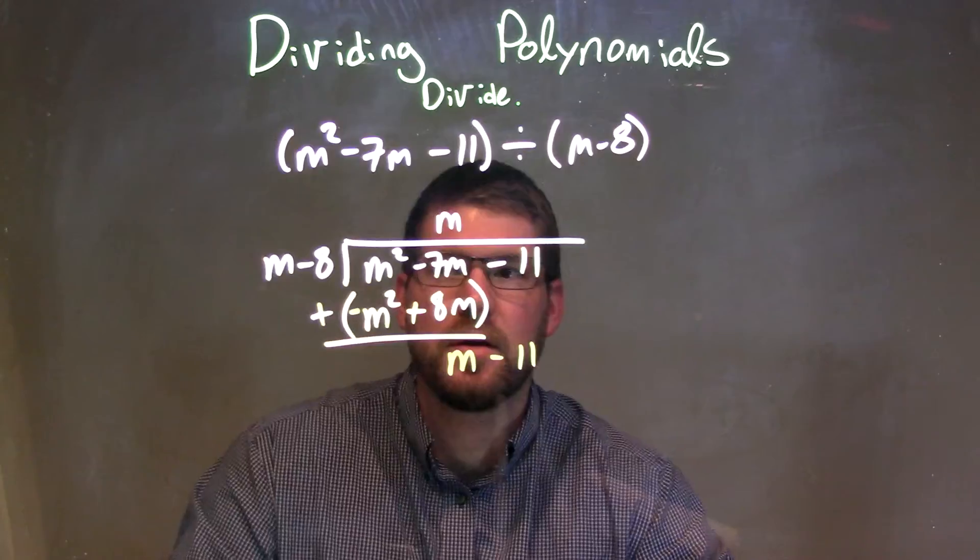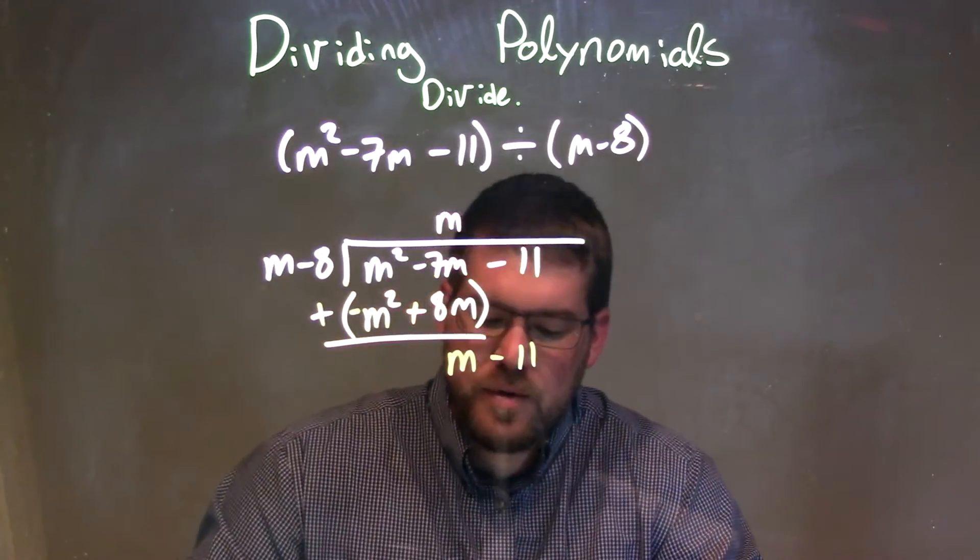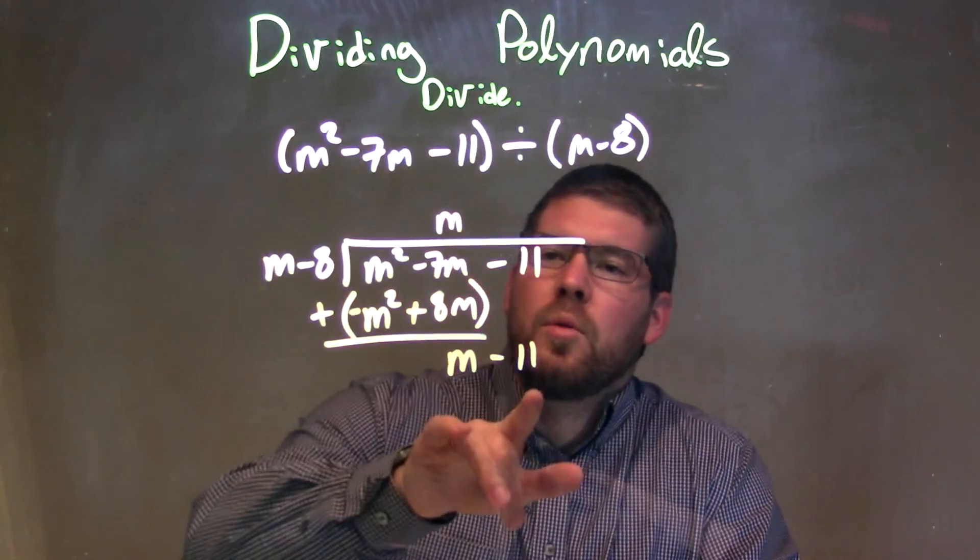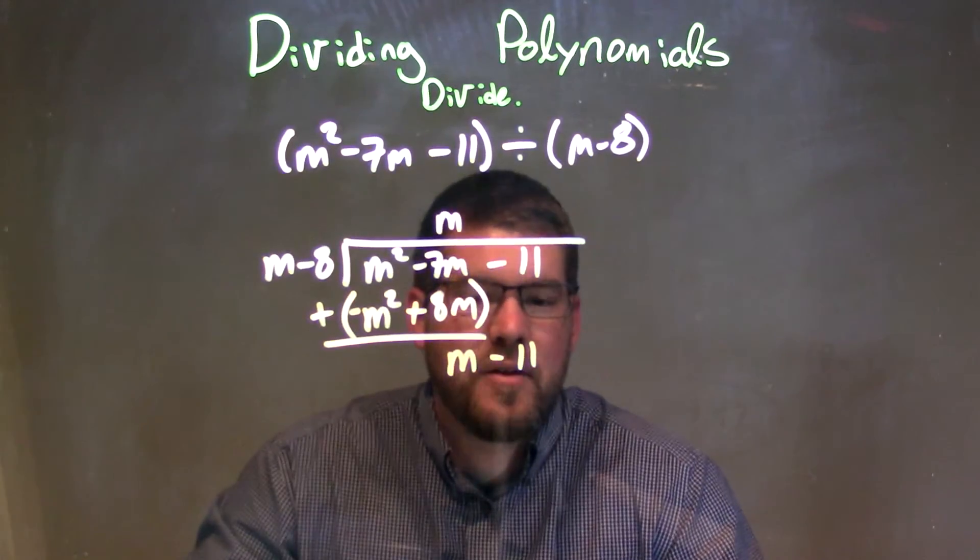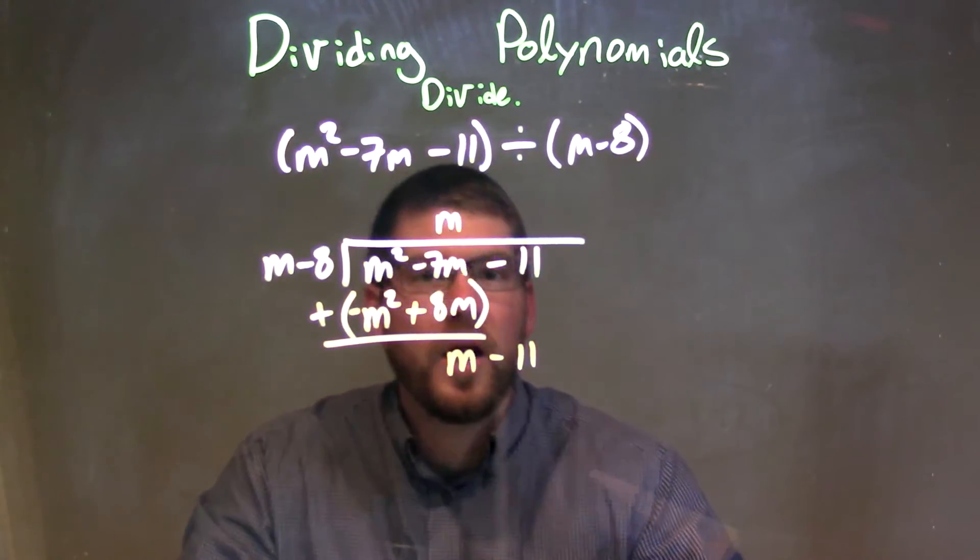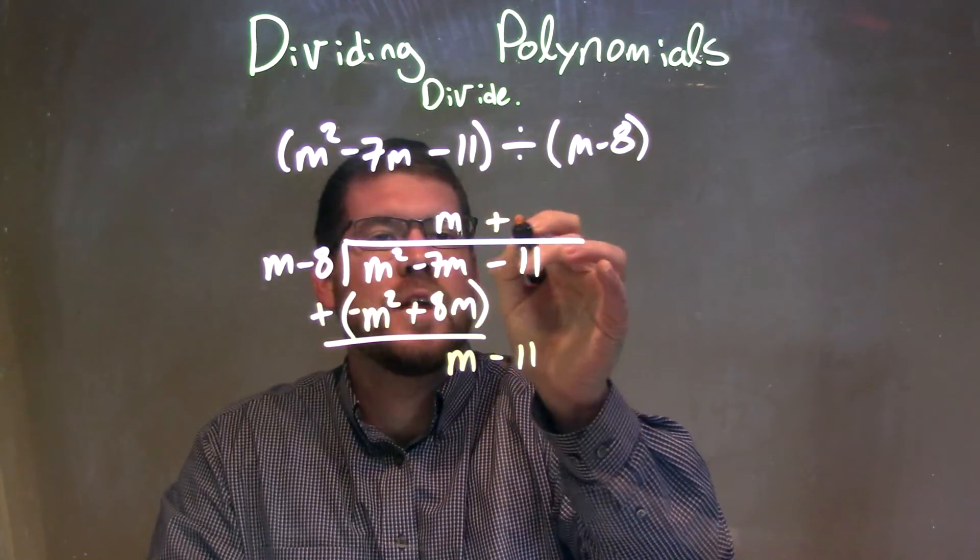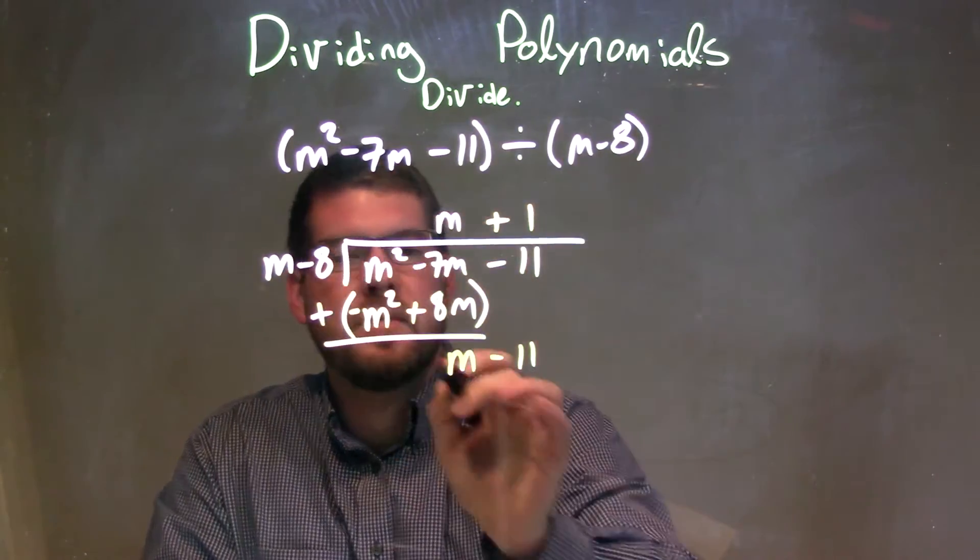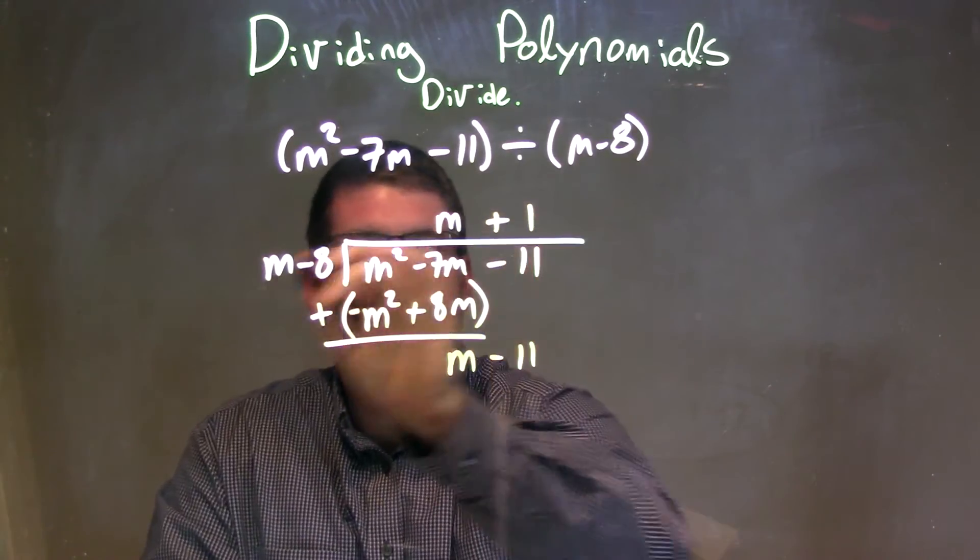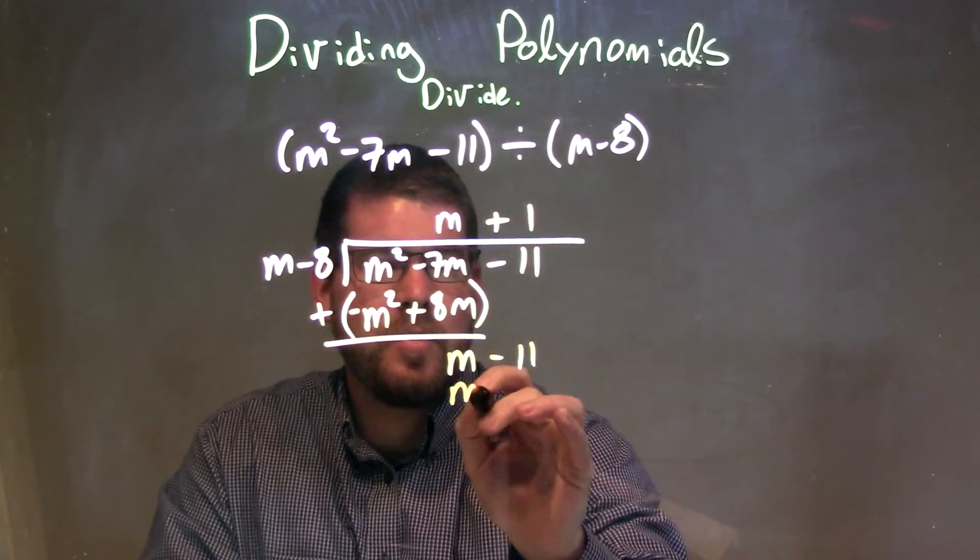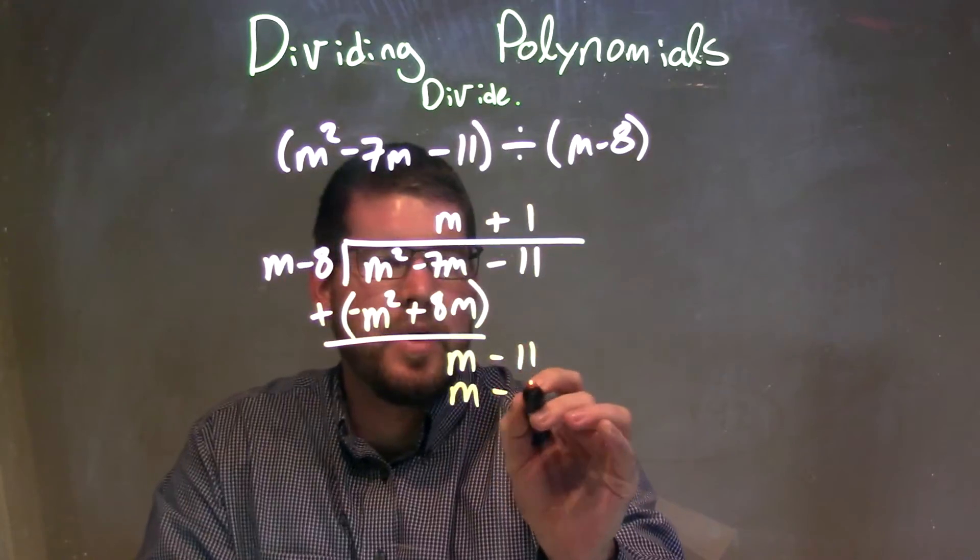Now we can do the same thing. What times m gives me m? It's just 1, right? Positive 1. If we take positive 1, positive 1 times m gives me m. So 1 times m gives me this m here, and 1 times minus 8 is minus 8.